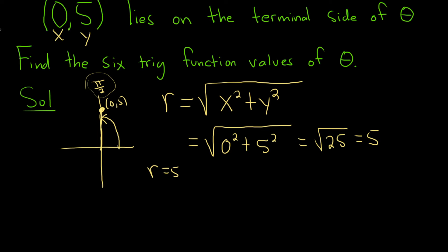All right, so now we can start writing down the answers. There's formulas we can use. So the sine of theta is given by the formula y over r. So in this case, y is 5, so it would just be 5, and r is 5, so 5 over 5, so we get 1.